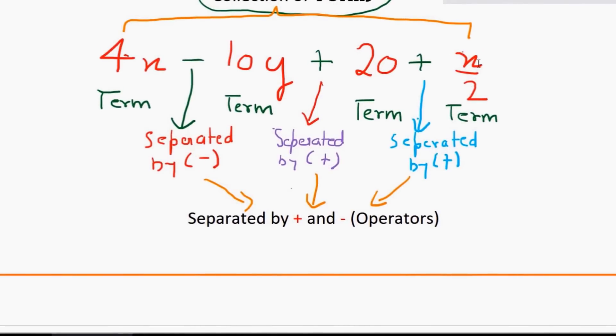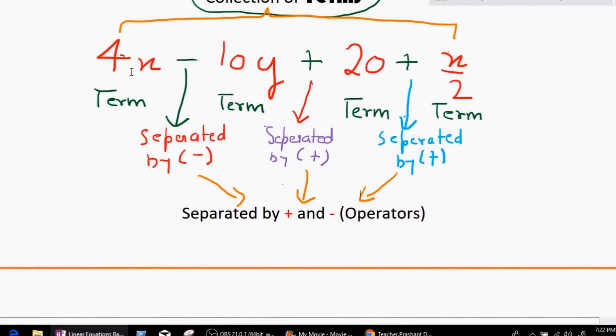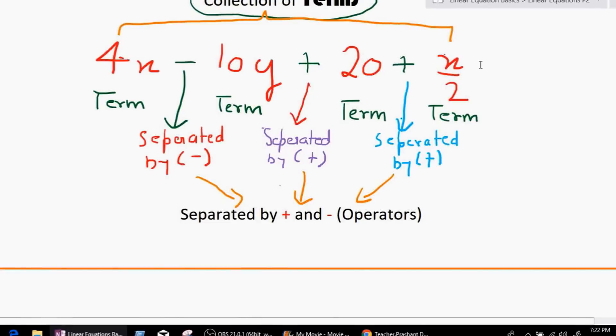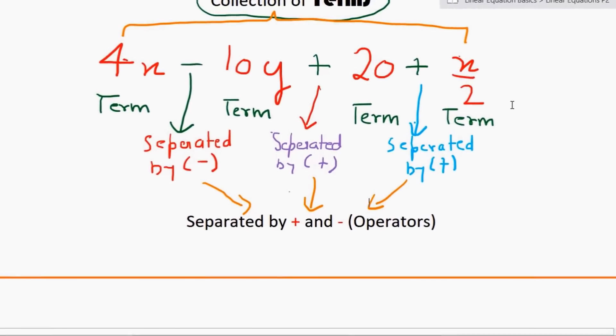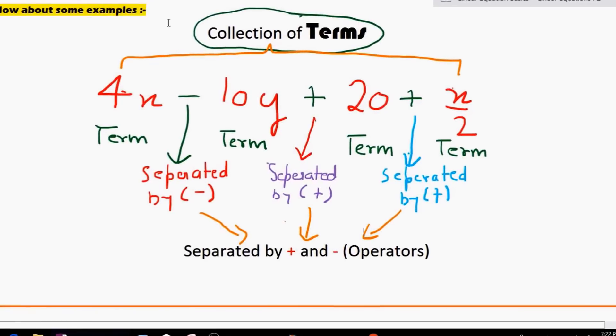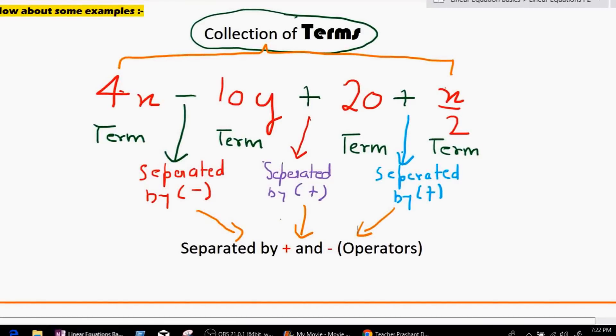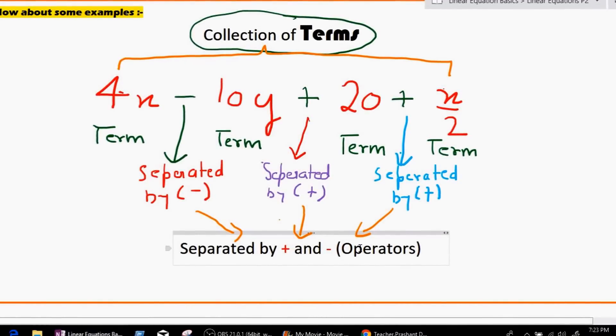Division, which you can see right here, x divided by 2 and 4x means 4 multiply x. So let me say that one more time. Multiplication and division cannot separate a term. Because 4x is still just one term, multiplication can't separate terms. And x divided by 2, since we have division right here and still it is considered as a term. So that shows that division also cannot separate a term. Now let's just summarize it really quick. Collection of terms, 4x minus 10y plus 20 plus x over 2 is actually an expression because they are terms separated by plus and minus. Very simple definition. And that's what we call an expression.